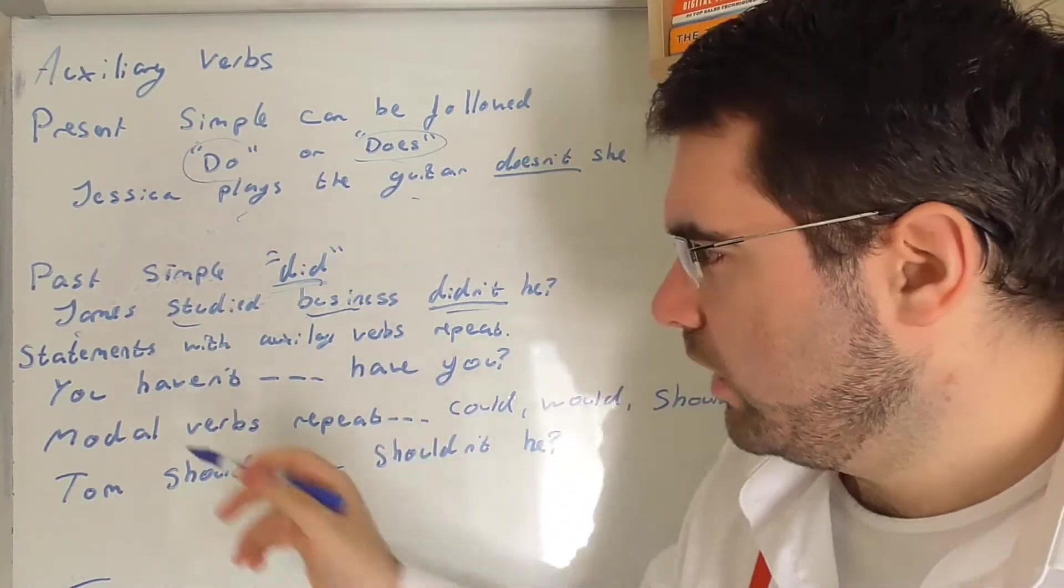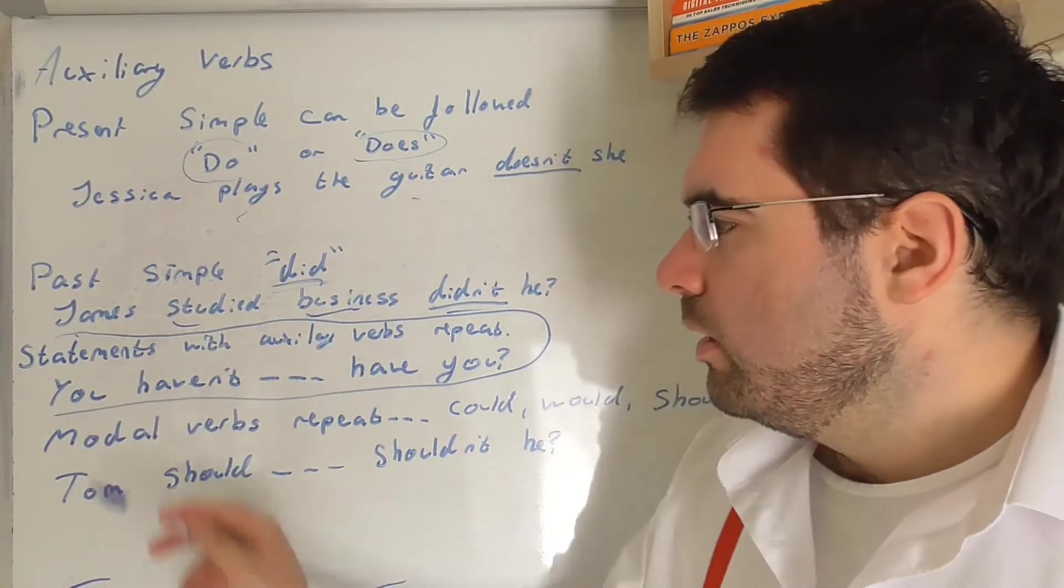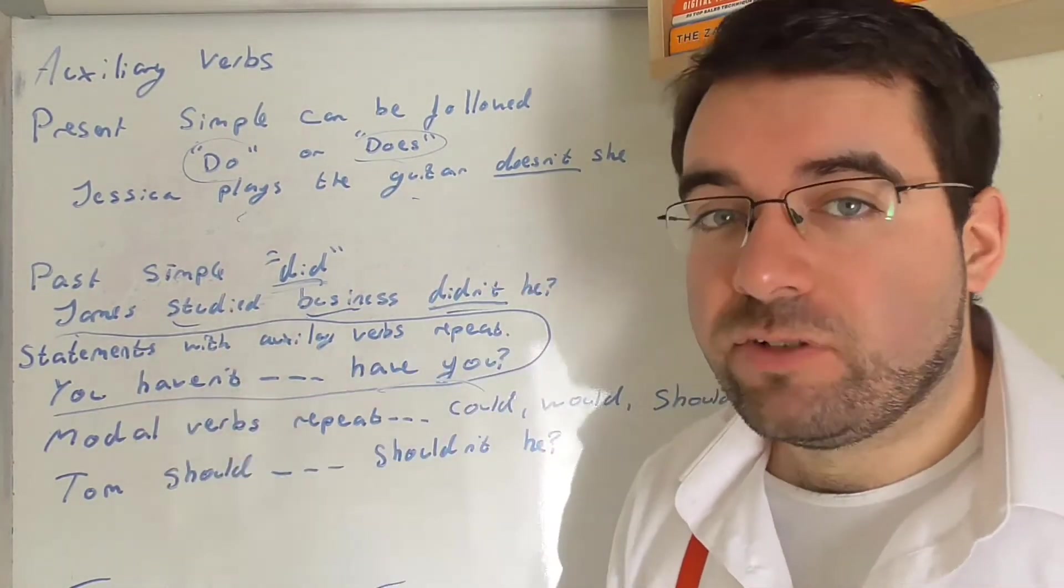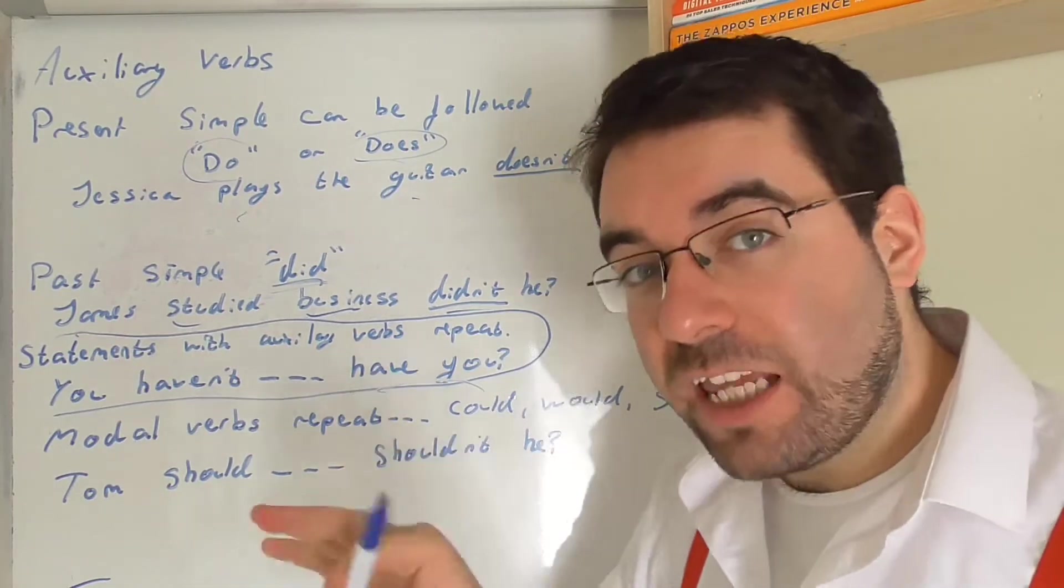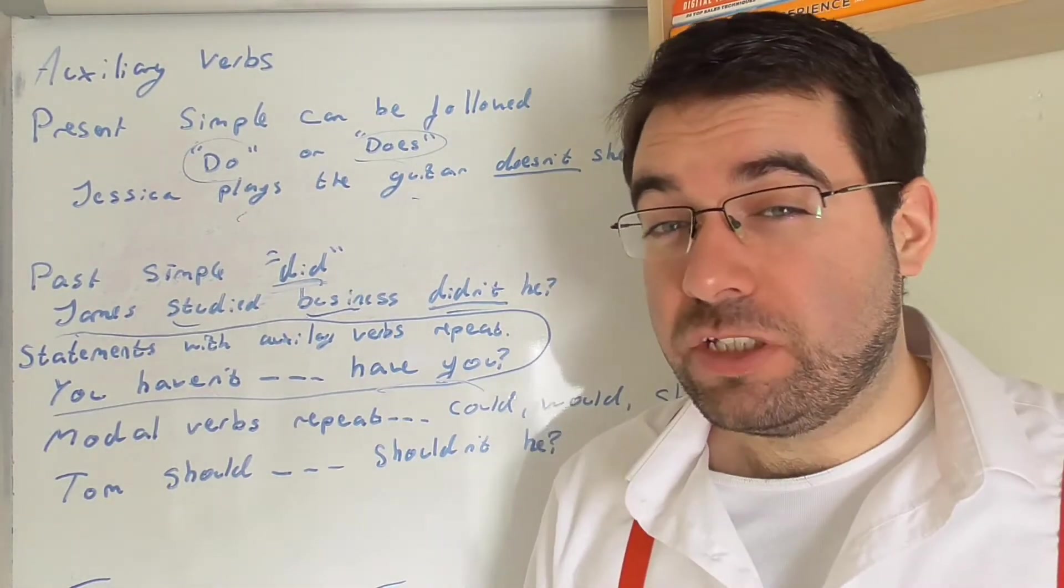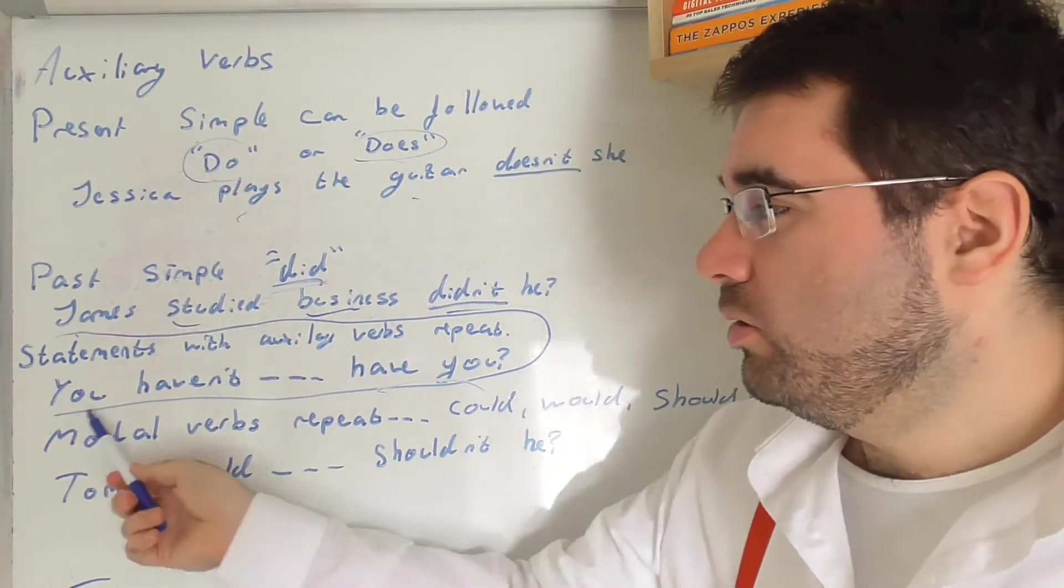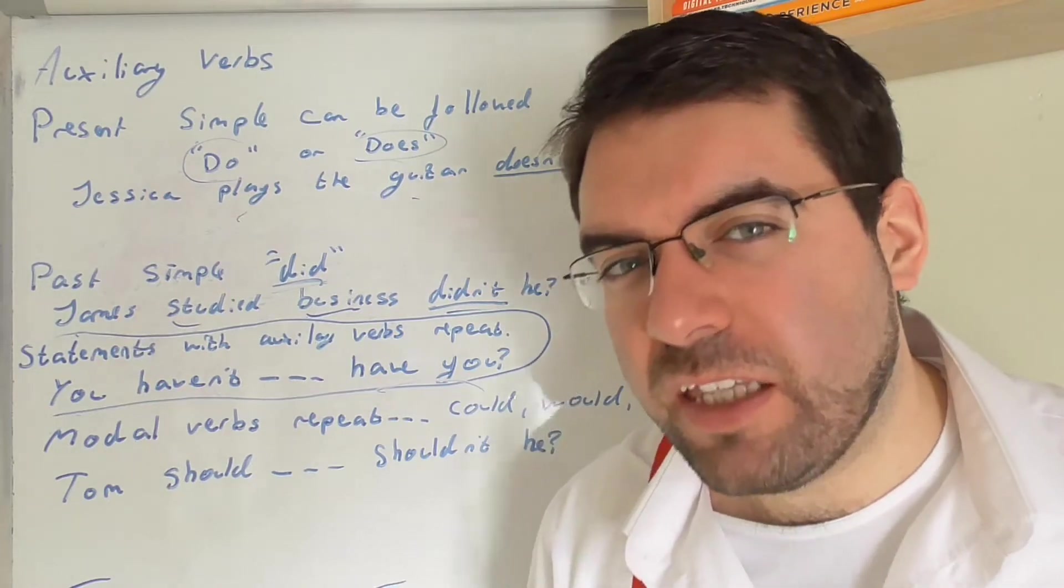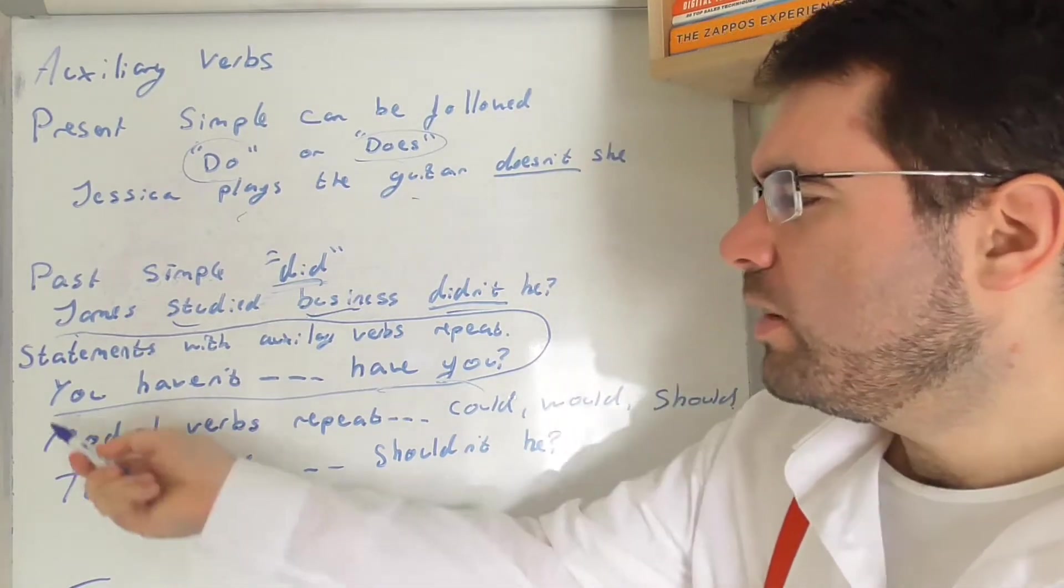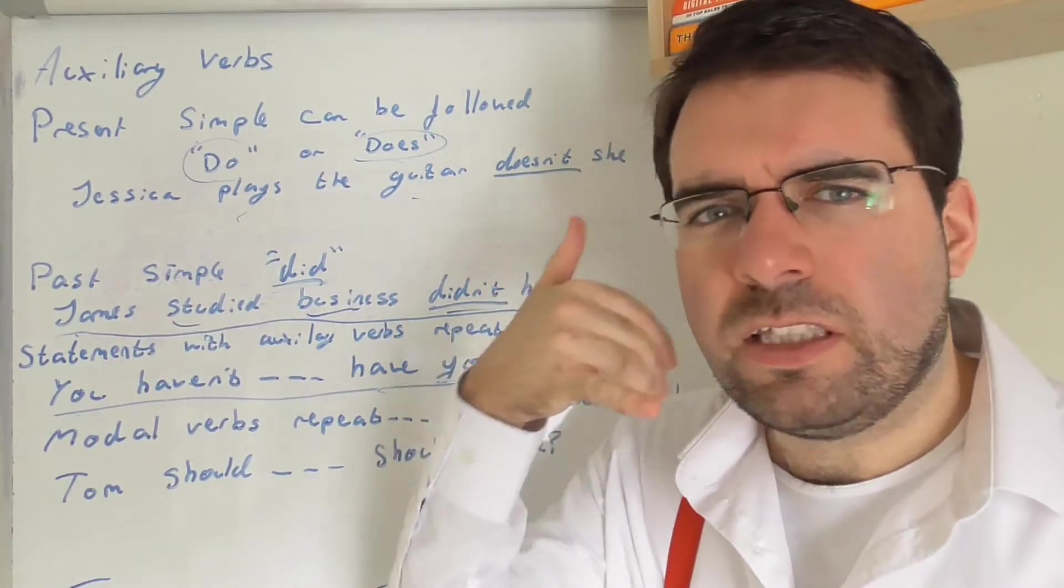But then, it gets a bit interesting. Statements with auxiliary verbs repeat. You haven't been to France, have you? If it's got a form of have, positive or negative, in the statement, then the question tag follows suit. You have been to Germany, haven't you? They haven't come back from holiday, have they?